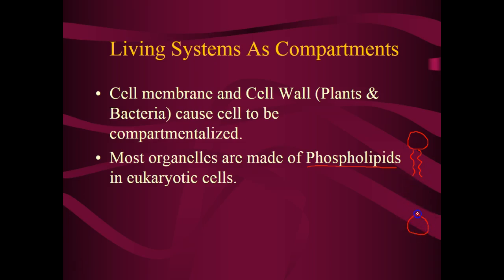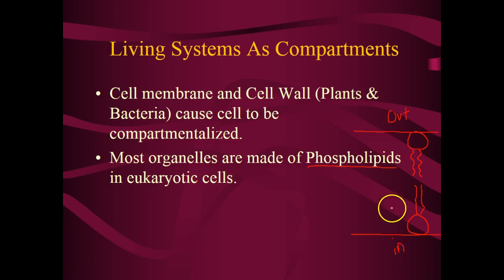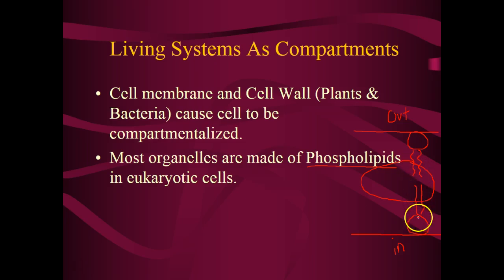The phospholipid bilayer is going to orient itself where the tails are together and the heads are together, because on the outside and on the inside of the membrane — meaning on the outside of the cell and the inside of the cell — there will be water. There's water in the environment and there's water in the cell. There is no water in the region between the tails; this is a hydrophobic zone. Because the tails are both nonpolar, they orient themselves away from water and towards each other. That's a quick review of Chapter 2 and those individual molecules.